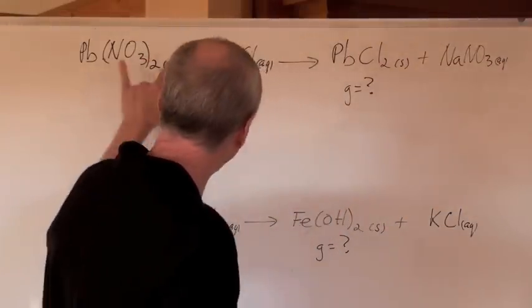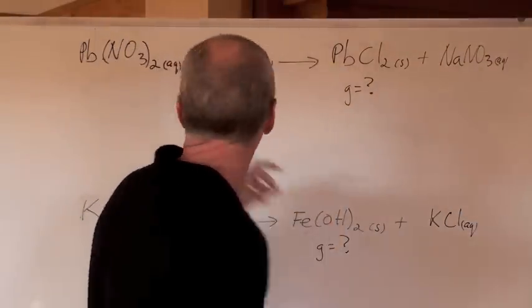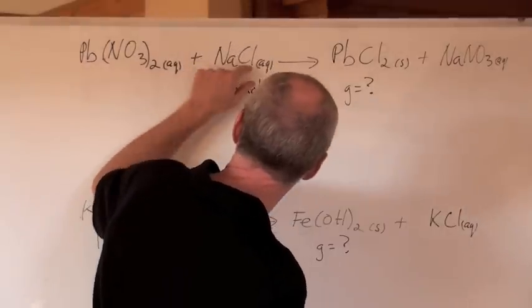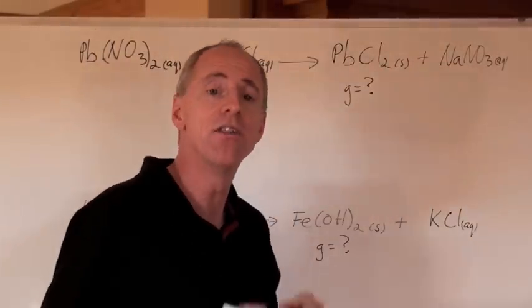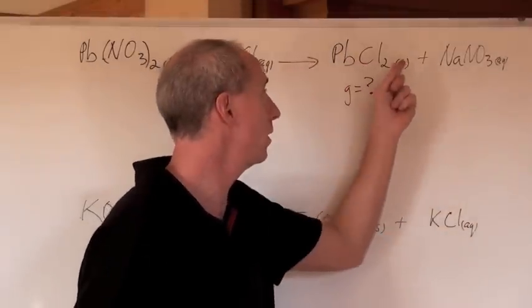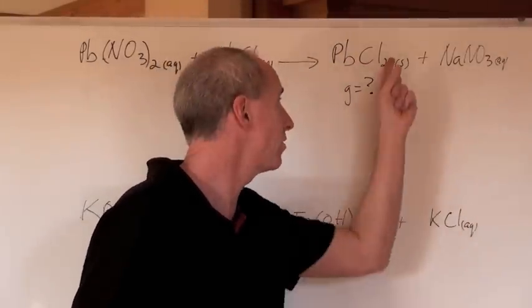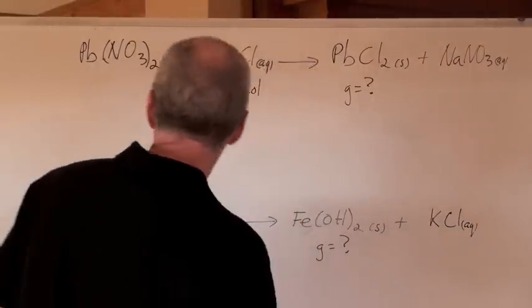Well, first of all, when you do the double replacement reaction, you're going to take those two aqueous solutions, mix them together, and when the lead-2 here goes with the chloride and the sodium goes with the nitrate, the lead-2 chloride, when you check the solubility chart, is a low-solubility compound, it's a solid. That's the precipitate. We're asking ourselves how much of that can form. First thing, balance the equation.